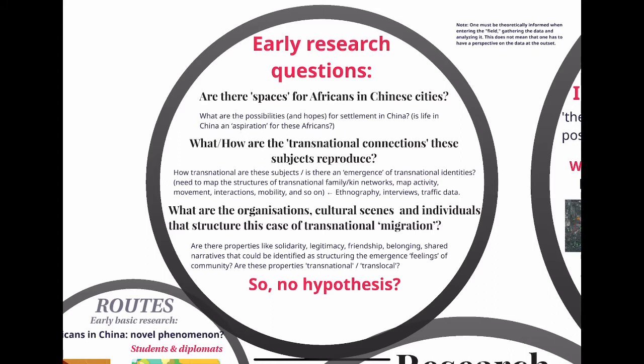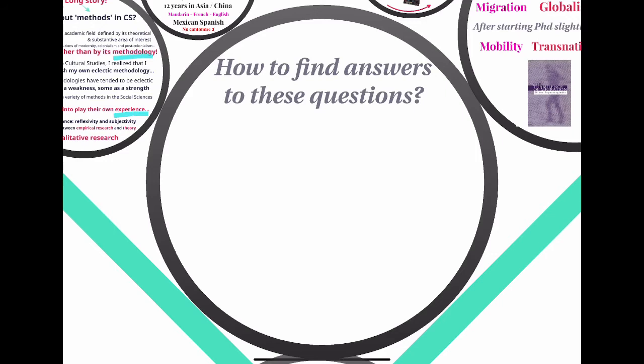You may be wondering: didn't you have a hypothesis when you started your research? The answer is no. I was theoretically informed and had developed theoretically informed questions, but I was not advancing a clearly stated hypothesis. Some people think that not having a hypothesis at the beginning is a weakness, but that's just one perspective — there are many different perspectives on how to do research. So how do we find answers to these questions? This is where we start talking about ethnography.